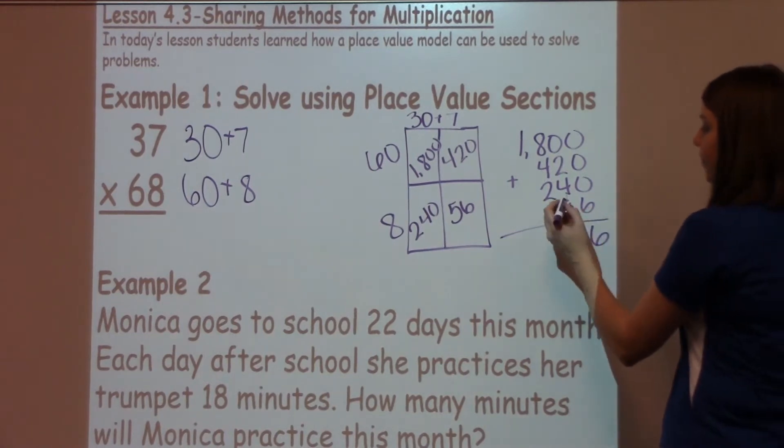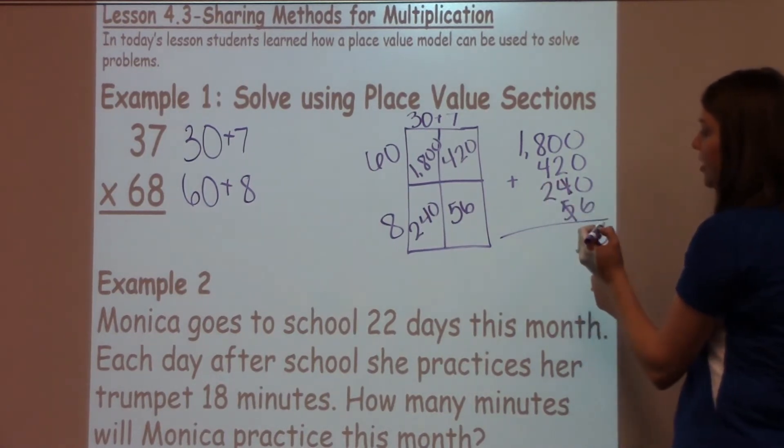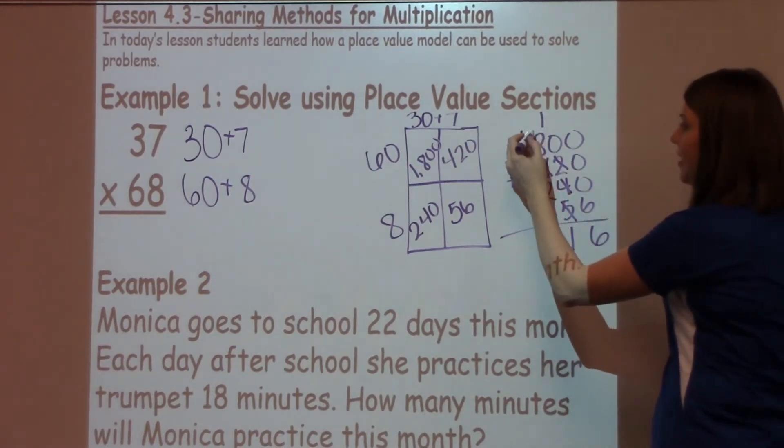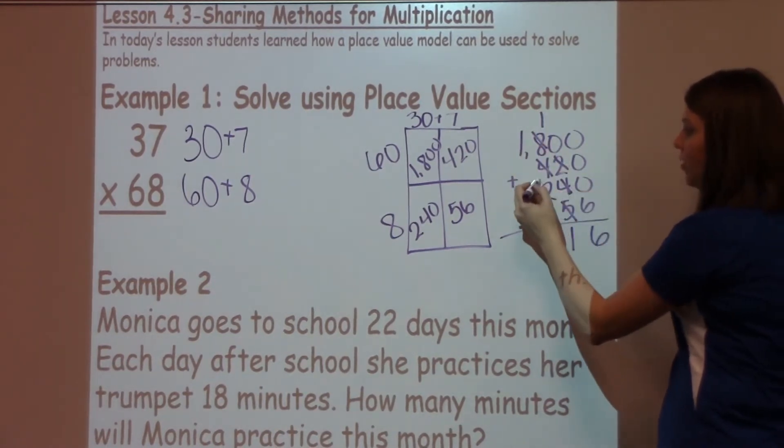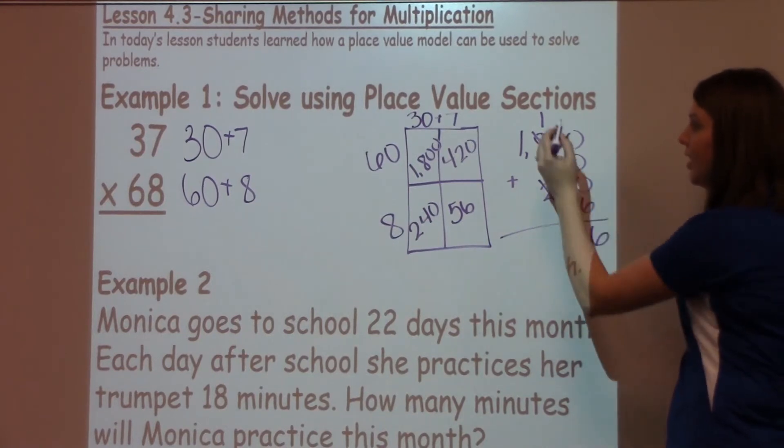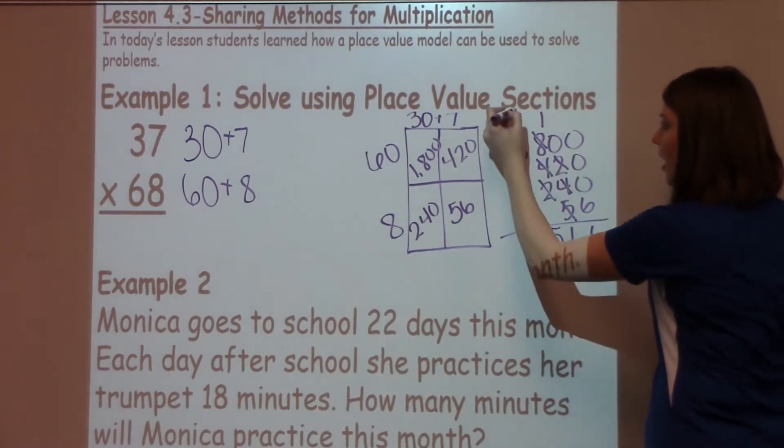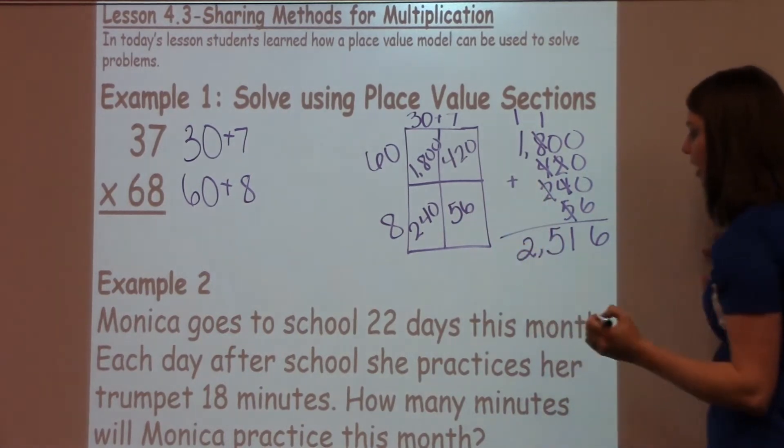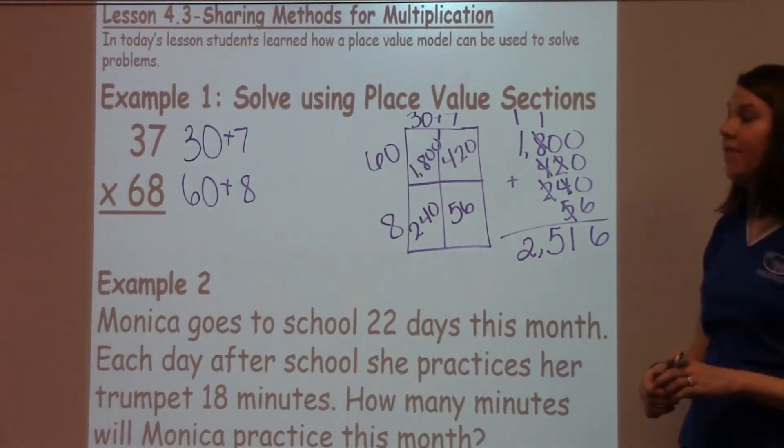So I've got my 5 plus my 4, which is 9, plus 2 more, which is 11. Then I've got 4 plus 8, which is 12, plus 2 more, which is 14, plus 1 more is 15. Carry my 1. And then I've got 1 plus 1, which is 2, for an answer of 2,516.